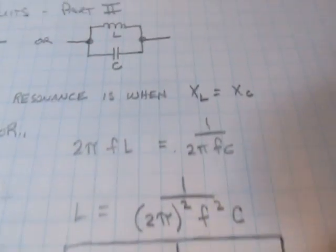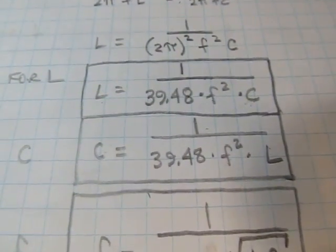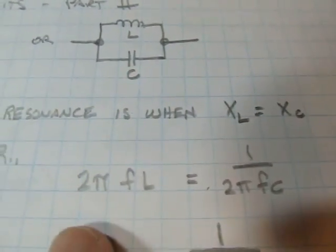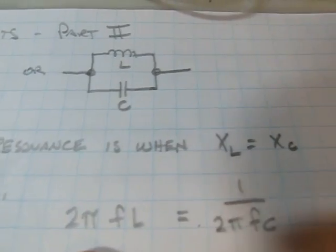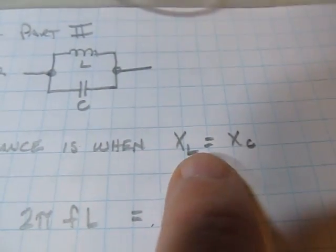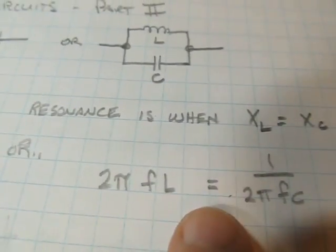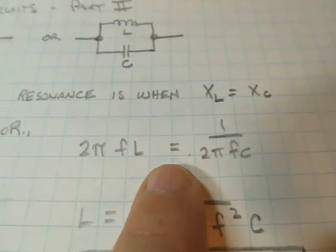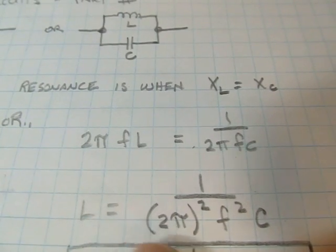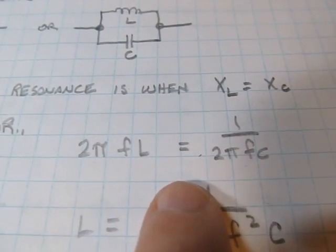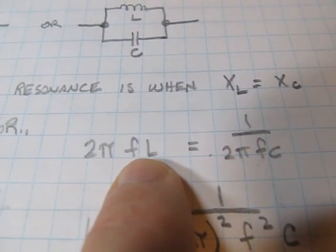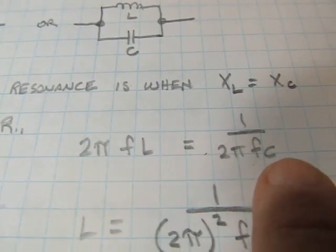So first, let's take a quick look and see how these equations were put together. We define resonance when the inductive reactance and the capacitive reactance are equal, so we set those two things equal to each other, and we can rearrange this formula to solve for any of the particular values. So we have resonant frequency, inductance, and capacitance.